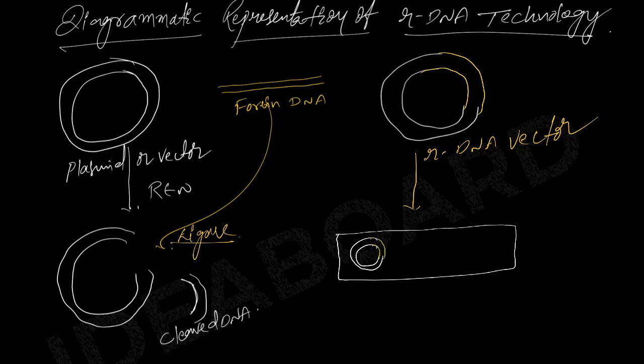Whenever bacterial cells undergo binary fission or replication, by that time the plasmid copy also undergoes replication and produces multiple copies. This is what we call nucleoid DNA. This is bacterial DNA or nucleoid.